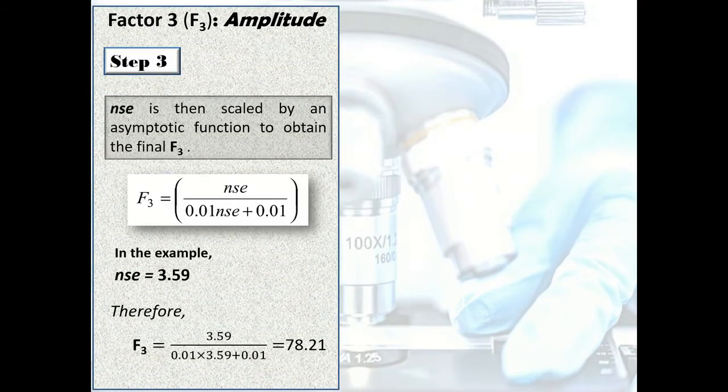In step 3 of amplitude calculation, NSE is scaled by an asymptotic function to obtain the value of amplitude. In simple words, we scale NSE to obtain a value that varies between 0 and 100, just like the values of scope and frequency. The formula is F3 or amplitude = NSE/(0.01×NSE + 0.01). Wherein, when we put the value of NSE to be 3.59, we will get the value of amplitude as 78.21 for this particular example.